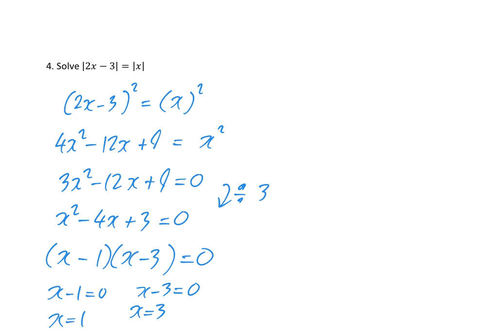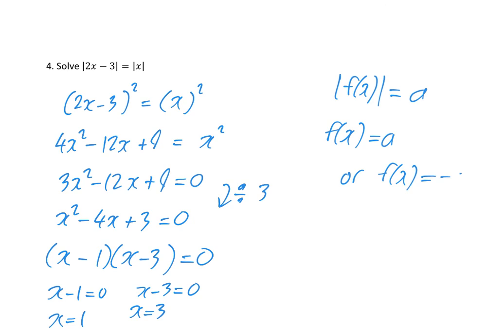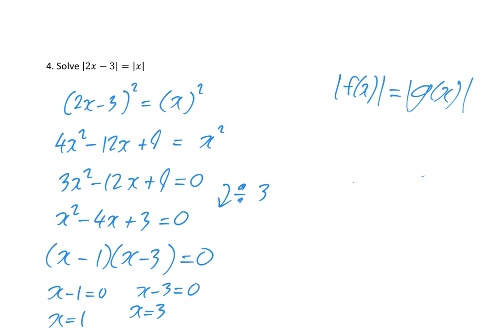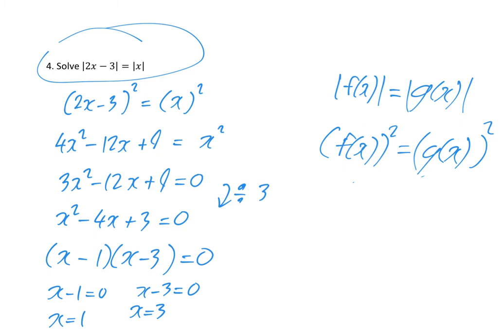Generally, if a question has some function of x equal to just a number a, you can use the quick method: f(x) equals a or f(x) equals minus a, and then solve. But if the modulus of f(x) is equal to another function of x, such as g(x), then you must square both sides and solve it like a regular quadratic, cubic, or whatever it happens to be.